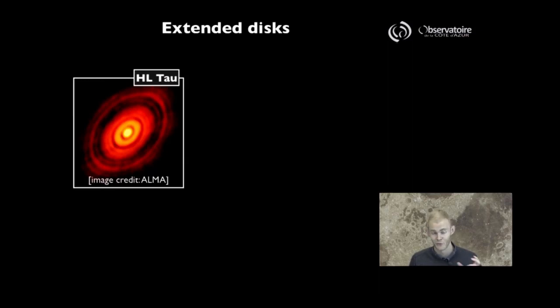This incredible image required antennas to be as far as 15 kilometers from each other to reach the necessary resolution, producing this very nice image of an extended disk inside which you can clearly see gaps. The assumption is that the formation of these gaps is induced by the presence of planets around this object.